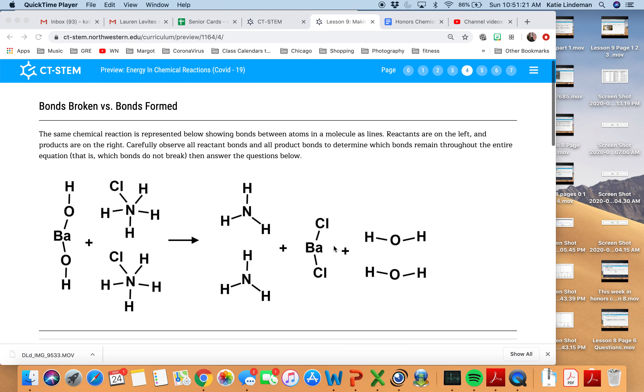And again, you're just counting the bonds that were made and the bonds that were broken. So for a bond that's broken, for example, chlorine and nitrogen here. I see chlorine and nitrogen on the reactant side. I do not see chlorine and nitrogen on the product side. So it's almost like this chlorine broke off of here and is now part of the barium.